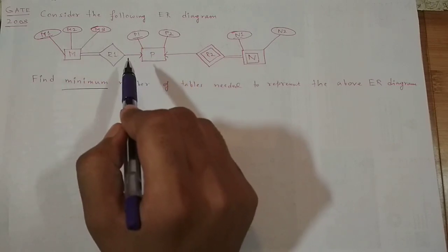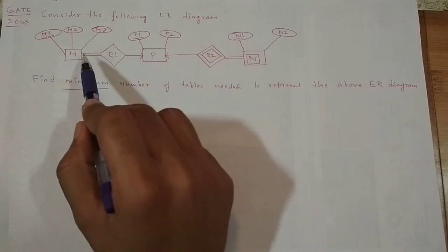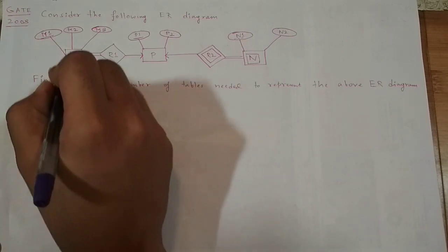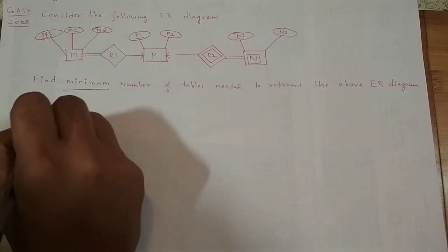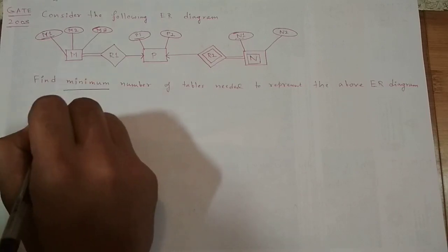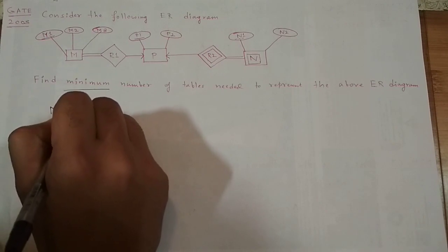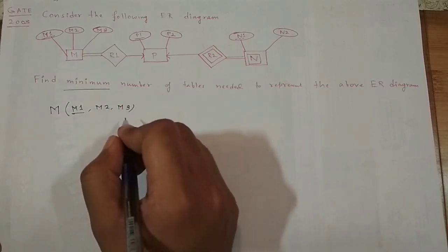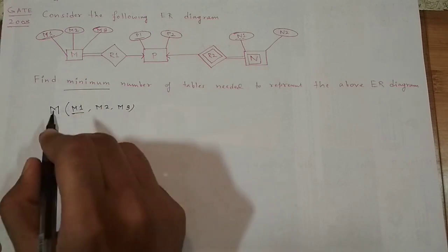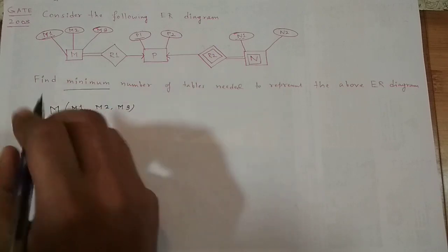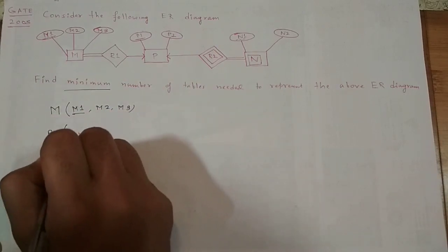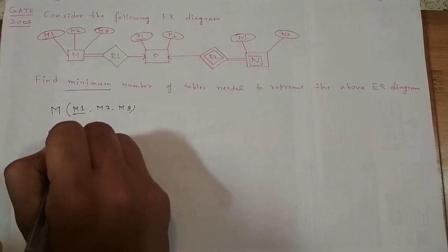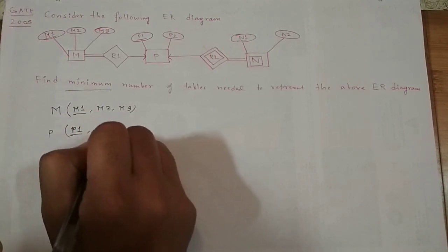Now let's find the minimum number of tables. To represent entity set M, I need a table with attributes M1, M2, M3 — defining a schema named M. For entity set P, I need another table with two attributes: P1, which is the primary key, and P2.